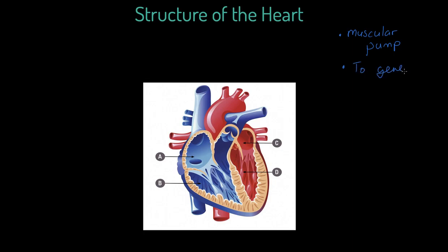The heart generates force to circulate blood. By extension, because the heart circulates blood around the body, blood carries numerous nutrients such as oxygen and glucose to various parts of the body. You're also studying this in other organisms like plants — how transpiration and translocation occur — but this is our human example, and the heart generates the force to distribute these resources.